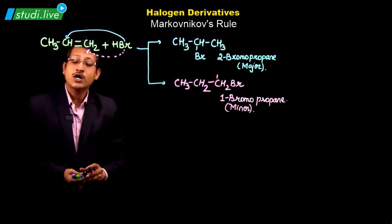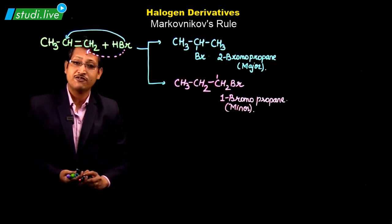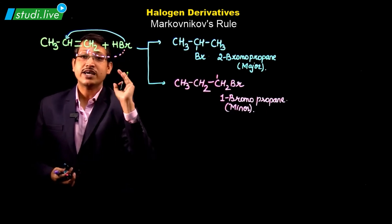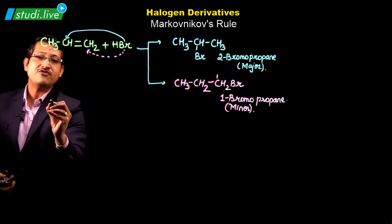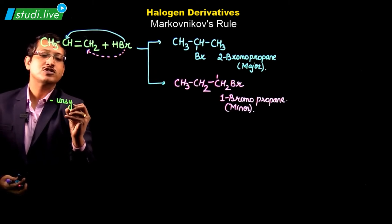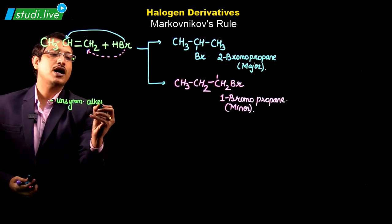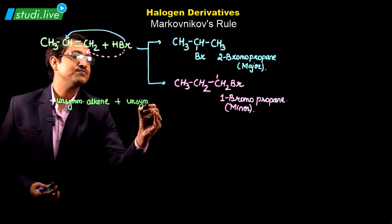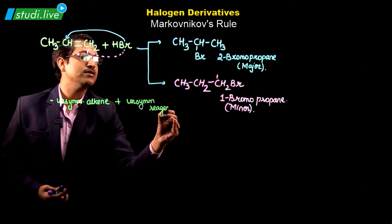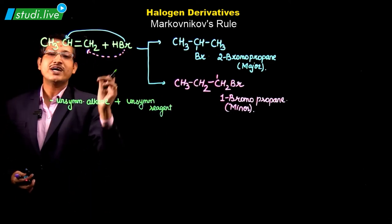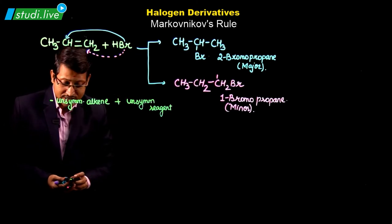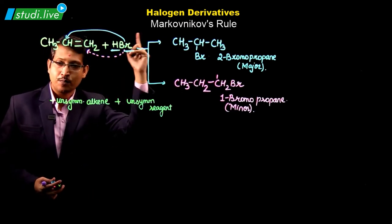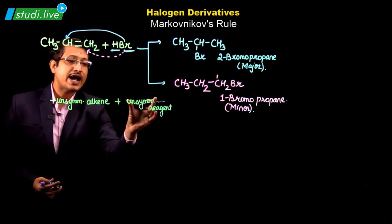Now, why is one the major product and the other the minor product? When this addition is taking place, Br can get attached at any position across the double bond. Here we are talking about an unsymmetrical alkene reacting with an unsymmetrical reagent. HBr is the unsymmetrical reagent — H is positive (H⁺) and Br is negative (Br⁻). So: unsymmetrical alkene reacts with an unsymmetrical reagent.